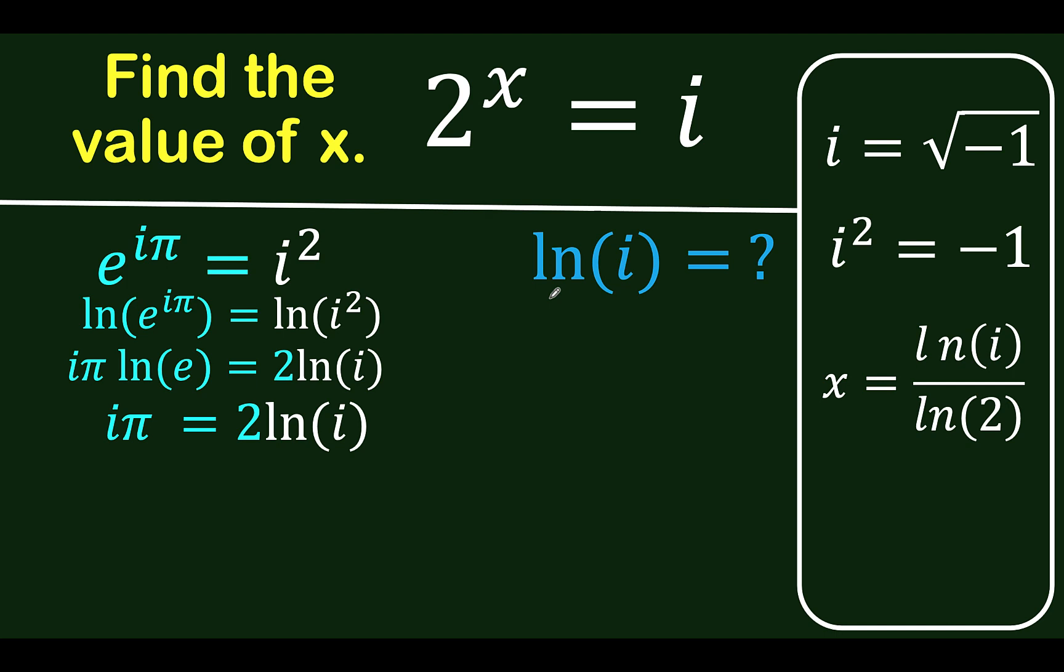Since we want to know the value of ln of i, we divide both sides by 2 to get iπ over 2 equals ln of i.